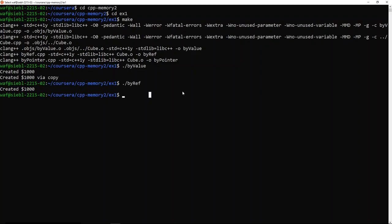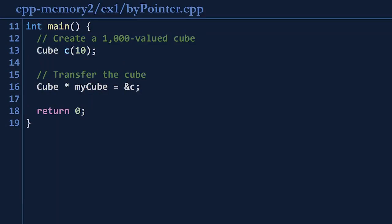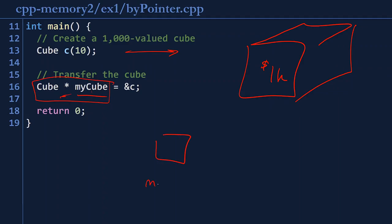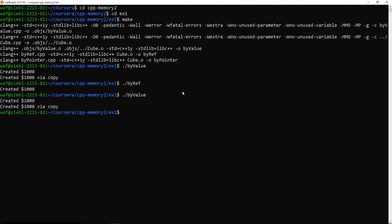The third program creates the same cube worth $1,000 and transfers it via a pointer. My cube is a new stack variable that is a pointer, pointing to the memory where C is defined. Unlike a reference alias, here we have two distinct variables — one is the cube and one is a pointer to the cube. Running by pointer: it creates exactly $1,000 exactly once, which is what we expected.